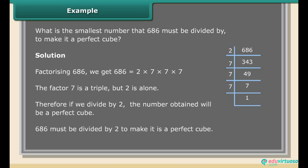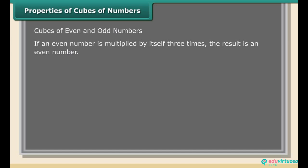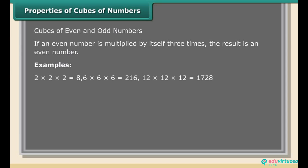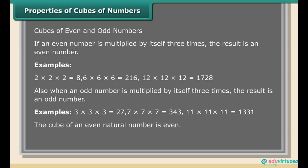Properties of cubes of numbers — cubes of even and odd numbers. If an even number is multiplied by itself three times, the result is an even number. Examples: 2 × 2 × 2 = 8; 6 × 6 × 6 = 216; 12 × 12 × 12 = 1728. Also, when an odd number is multiplied by itself three times, the result is an odd number. Examples: 3 × 3 × 3 = 27; 7 × 7 × 7 = 343; 11 × 11 × 11 = 1331. The cube of an even natural number is even; the cube of an odd natural number is odd.